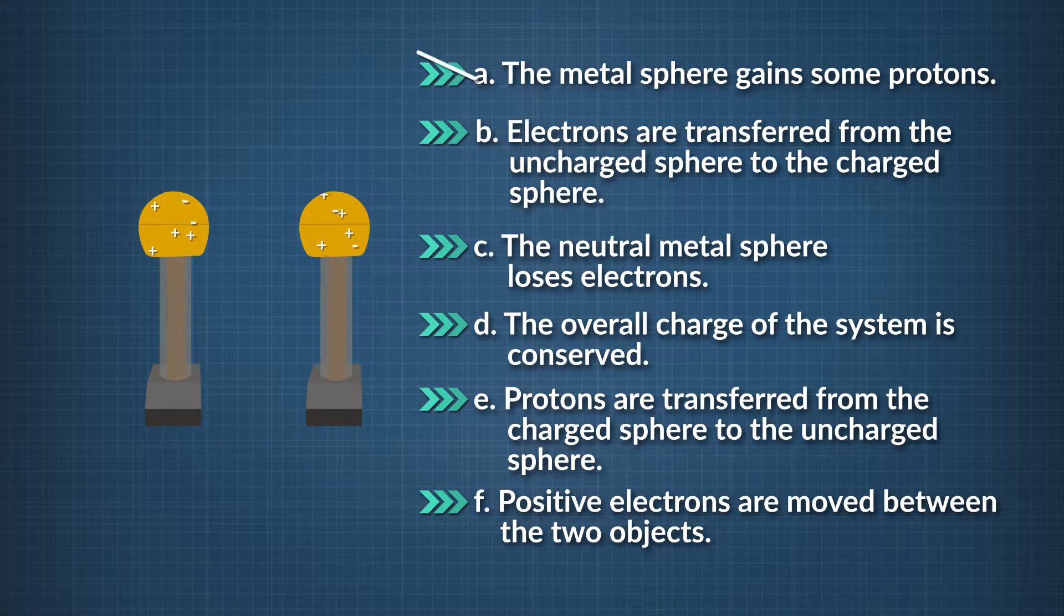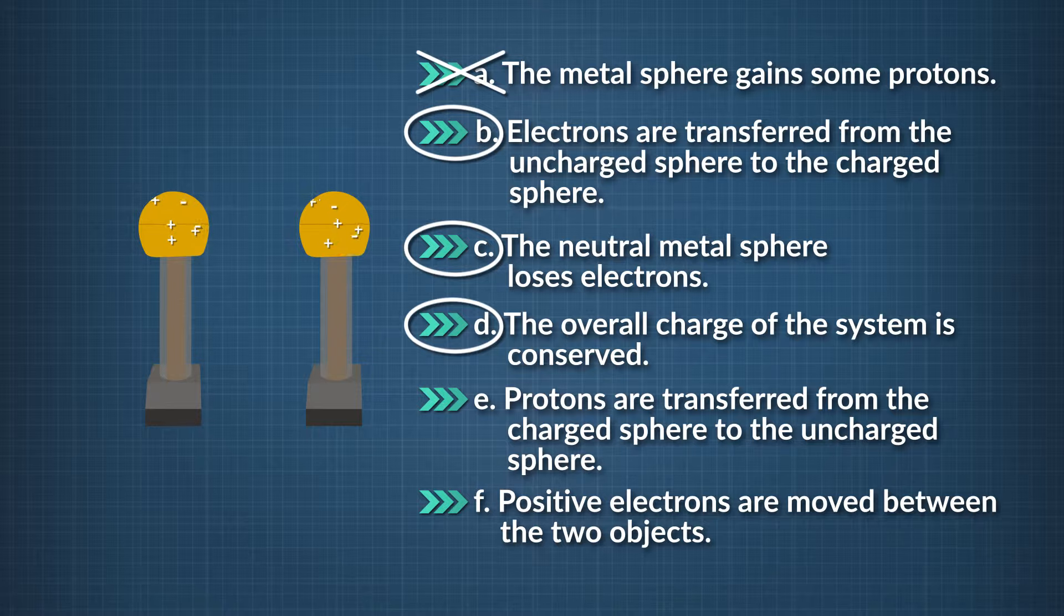So A is out. B is correct, because the sphere that starts out charged is charged positively. That means negative charge electrons will flow from the uncharged sphere to the charged one to balance out the charge. C is another way of saying B. It's correct. D is true. Though electrons flow from one sphere to the other, the overall electric charge is always conserved.